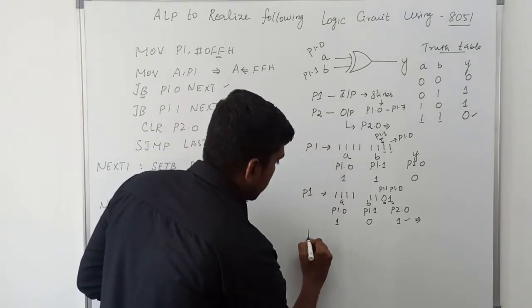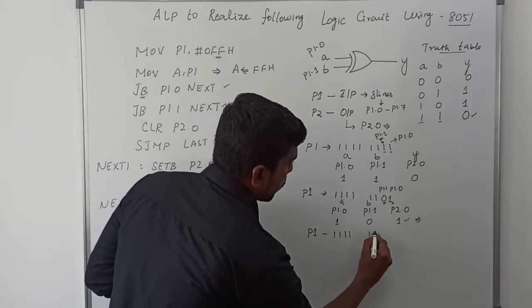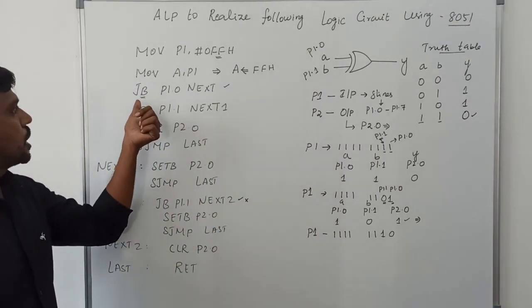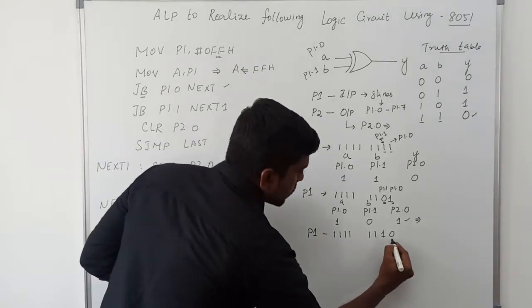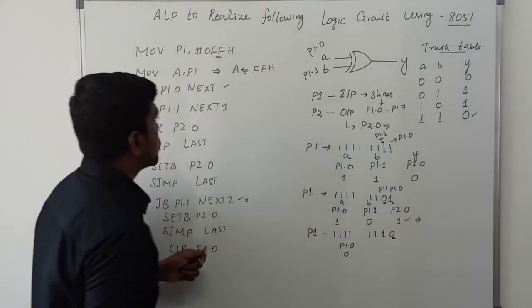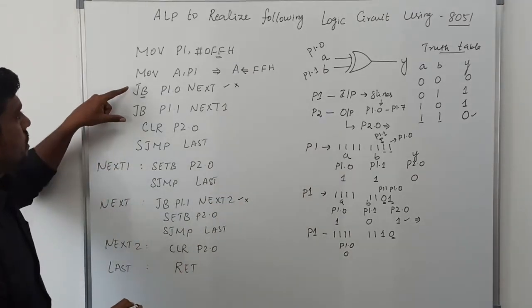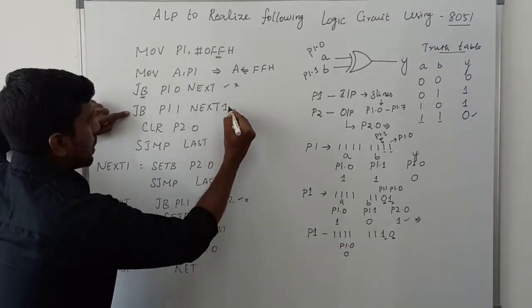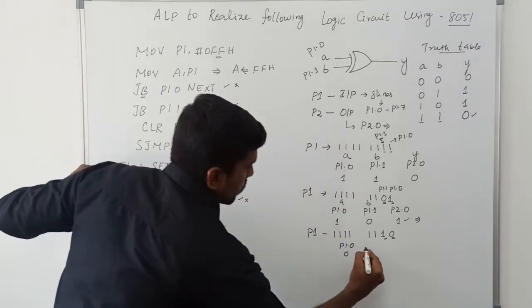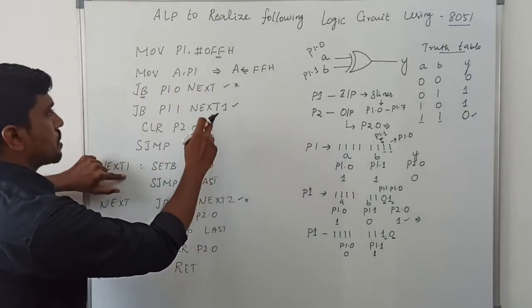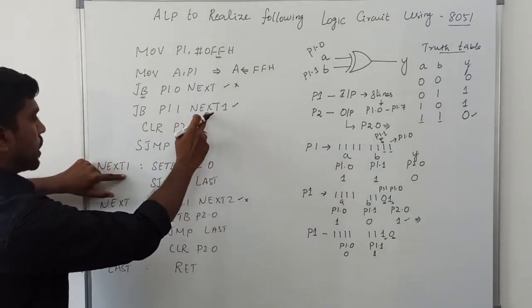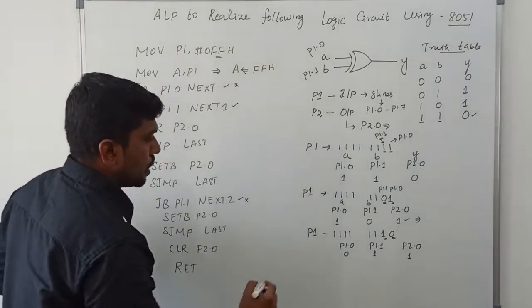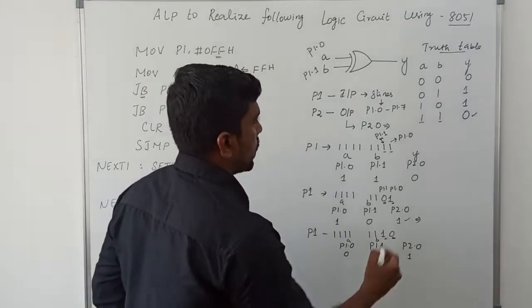Once again Port 1 value is changed to 1111 1110 — so P1.0 is 0 and P1.1 is 1. Checking JB P1.0 NEXT: P1.0 is 0, condition is false, executes next instruction JB P1.1 NEXT2. P1.1 is 1, condition is true, jumps — and SETB P2.0 sets output to 1. Truth table: A=0, B=1 gives output 1 — correct.